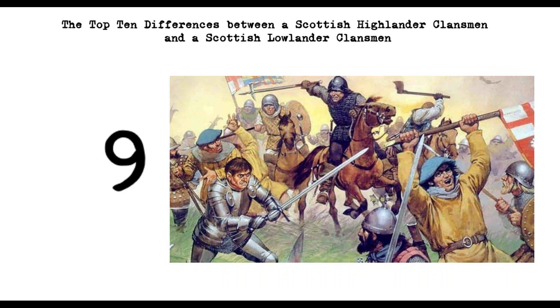9. Relationship with the English. Highlanders were more resistant to English rule, and often viewed the Lowlanders who collaborated with the English with suspicion. Lowlanders, on the other hand, tended to be more open to English influence.